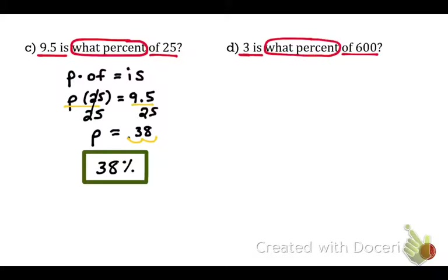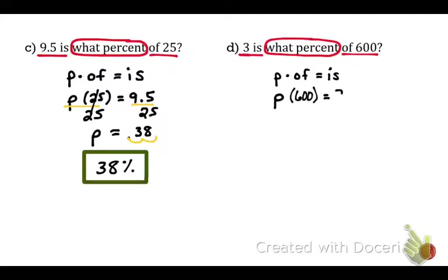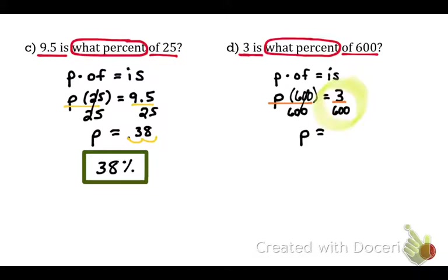What's the original formula? P times of equals is. Plug it in: keep P, multiply by of equals 600, and the is is 3. To get P by itself, divide by 600 on both sides. Remember: put the numerator in first — 3 divided by 600.